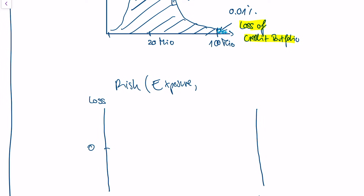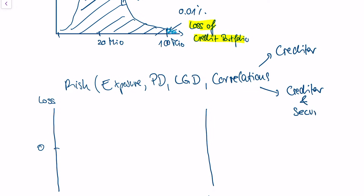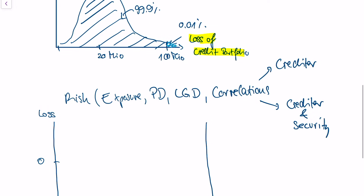You obtain this function by modeling the credit portfolio, taking into account the exposure amount, the PDs, the LGDs. The special thing about the Pillar 2 approach is that you also take into account the correlations — between creditors and between creditor and security. This is really important because most of the time you have a rather diversified portfolio. For example, you might have invested in train companies and airplane companies. If train companies have a bad year, airplane companies probably have a good year, meaning the correlations will decrease your overall risk.